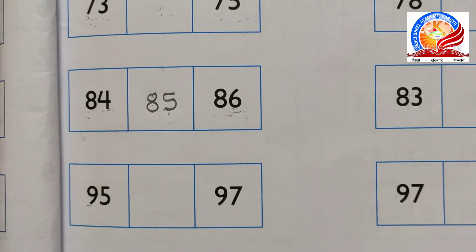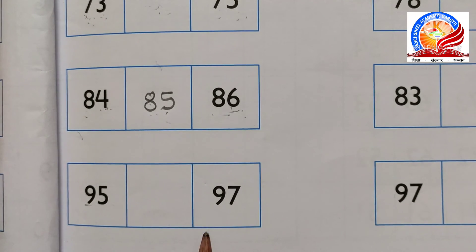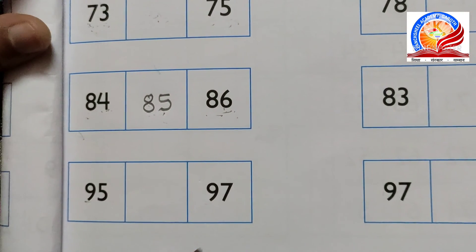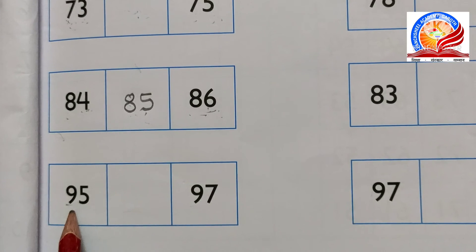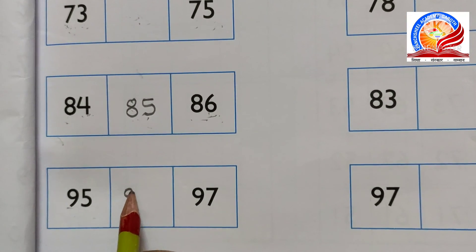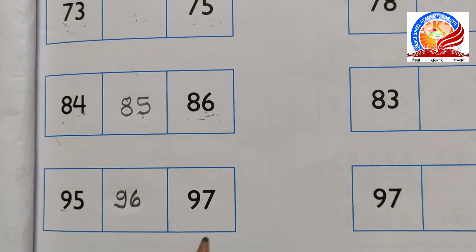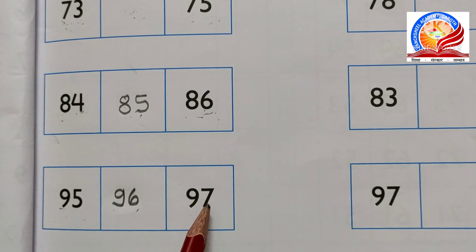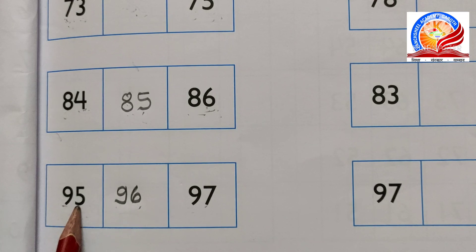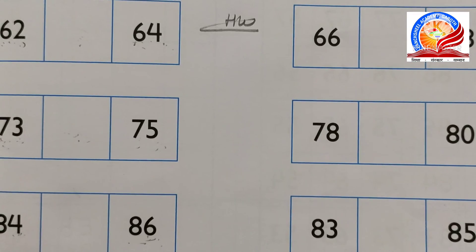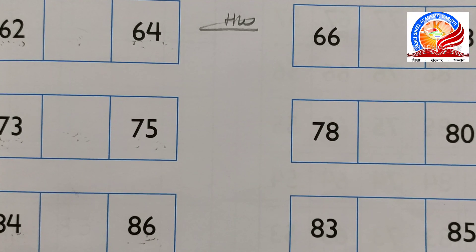Next, 95 aur 97. 95 ke baad mein kaun sa number aayega? Boliey: 91, 92, 93, 94, 95, and 96 and 97. 96 is between 95 and 97. 96 - 95 and 97 ka between number hai. Aapko aise hi bol bol kar yahan between number fill up karna hai. Yeh aapka HW hai.